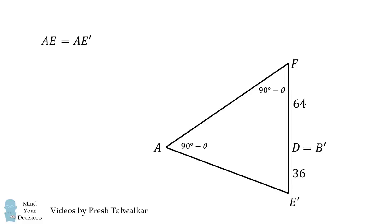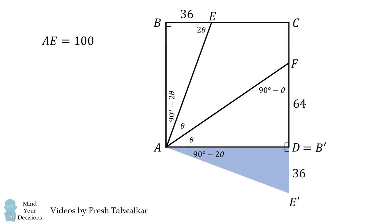So AE' is equal to FE', and now FE' must be equal to 64 plus 36, which is equal to 100. Therefore, AE' is also equal to 100, which means AE is equal to 100. And that's the answer. It's a very clever way using outside-the-box thinking.